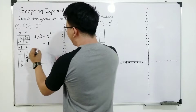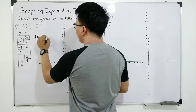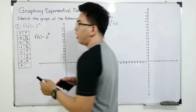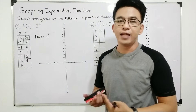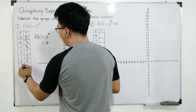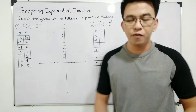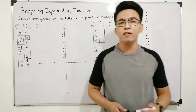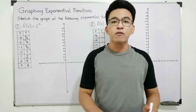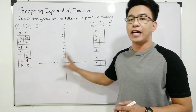This is 3. We have f of 3 is 2 raised to 3, and as you can see, ang ibig sabihin ng 2 raised to 3 natin is 2 times 2 times 2, that is equal to 8. So this is 8. And as you can see guys, we are done completing the table of values. If tapos mo nang i-evaluate yung ating function given the value of x and you have completed the values of y, you are now ready to graph or to plot the points and draw the graph sa ating Cartesian plane.